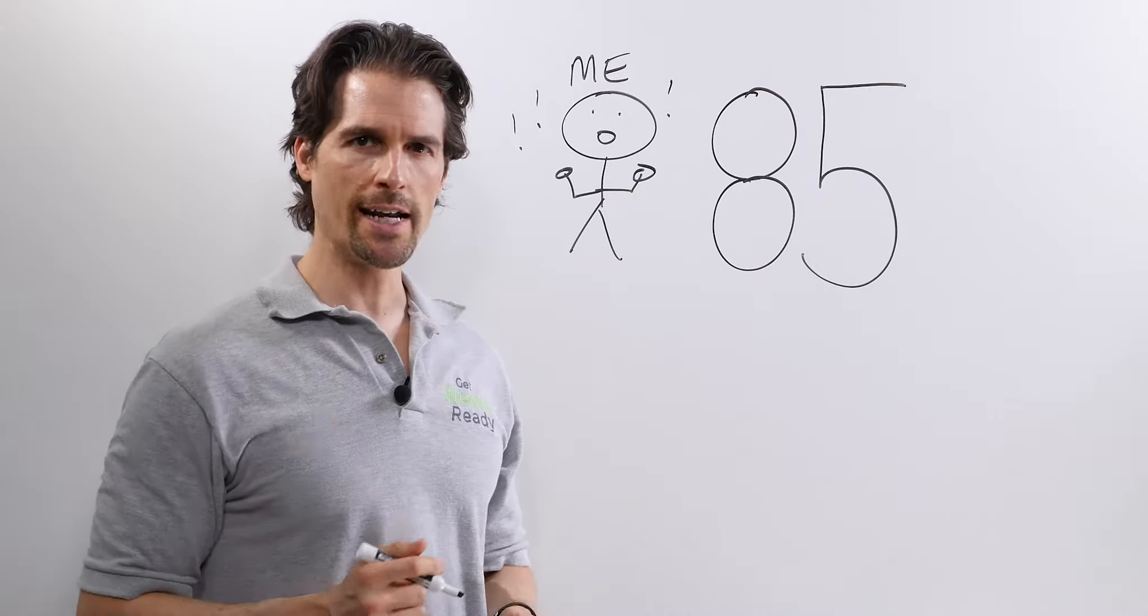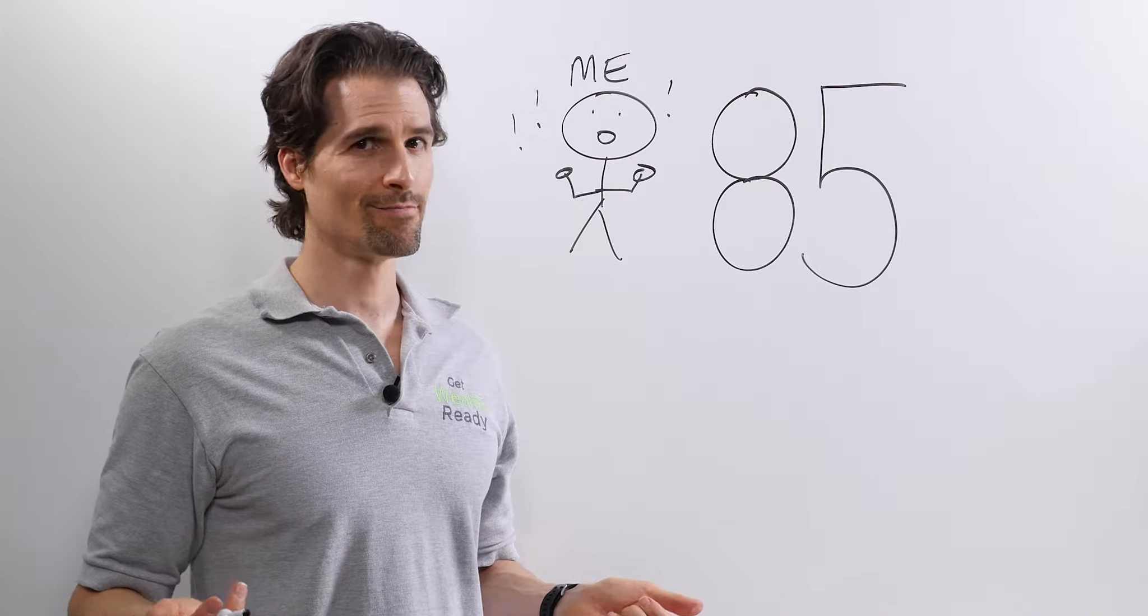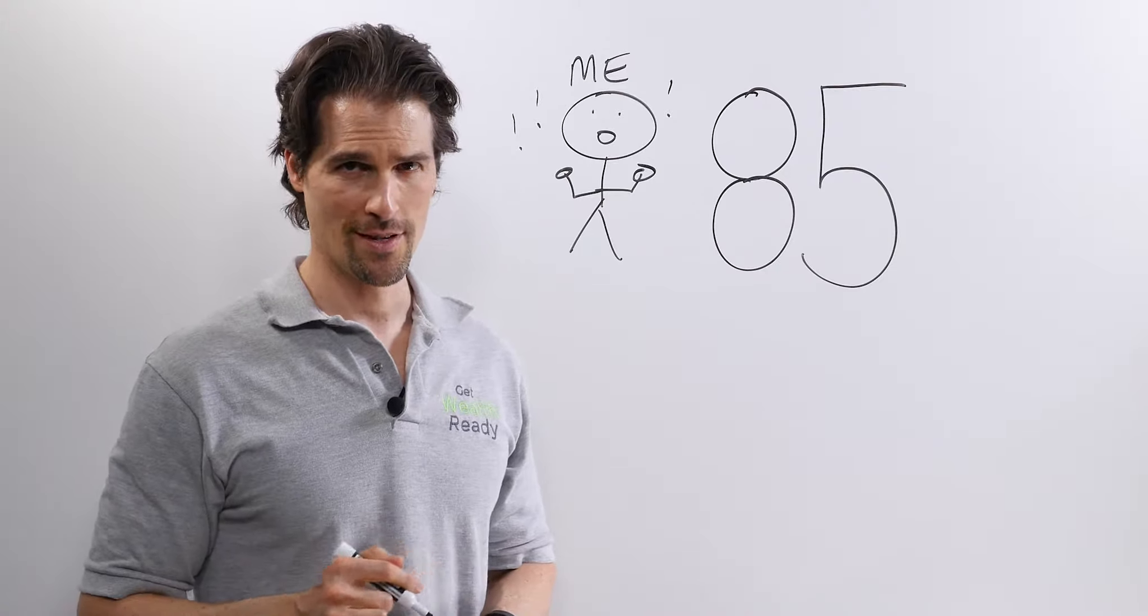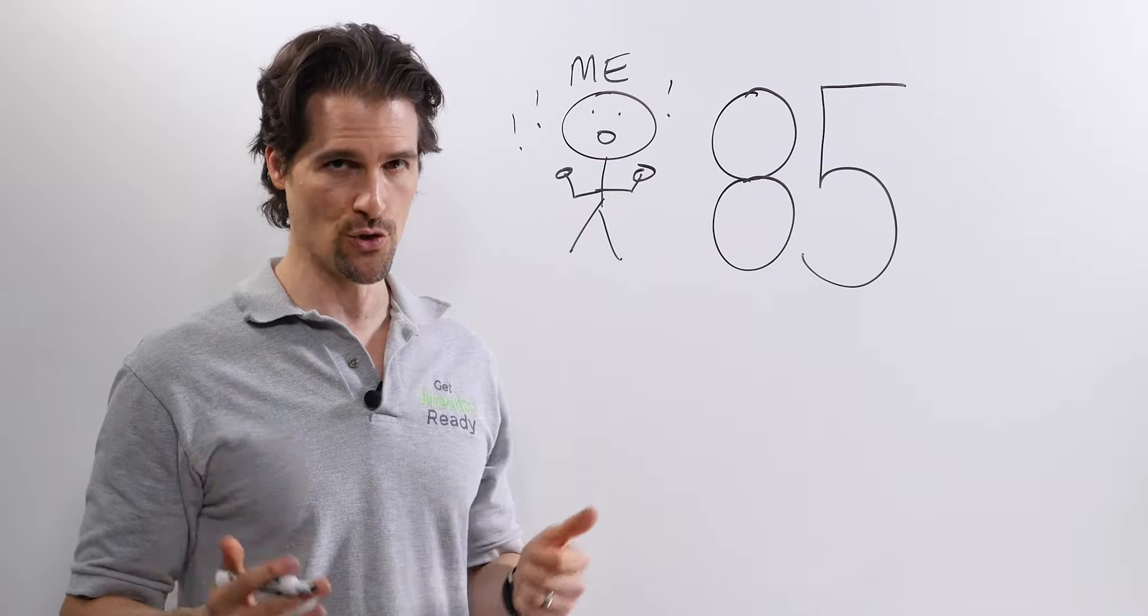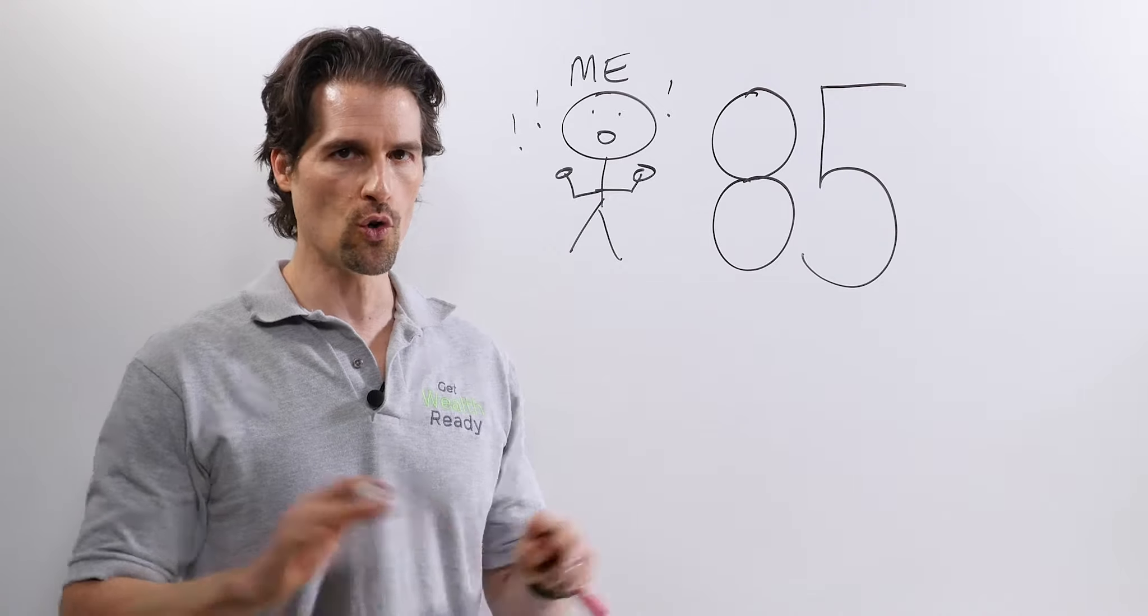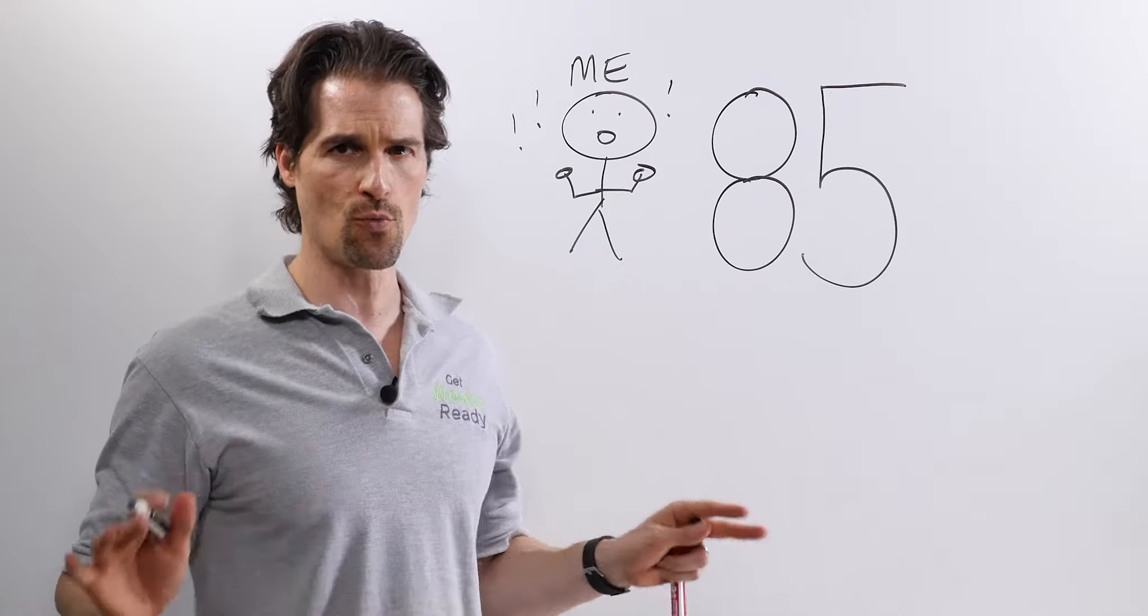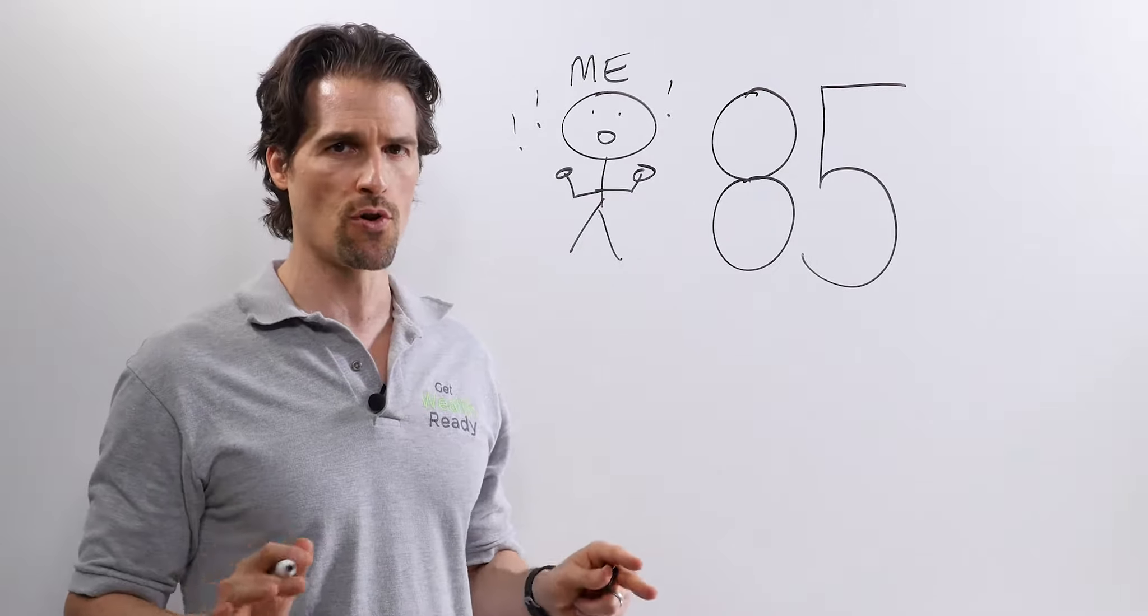Speaking of Tiger, if he shot an 85, what would we think? Well, we don't have to imagine. He shot an 85, and it was nearly a CNN breaking news story. The media was all over this, saying it was the worst round of his PGA Tour career.